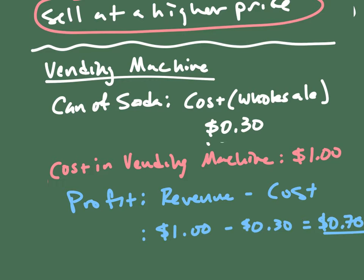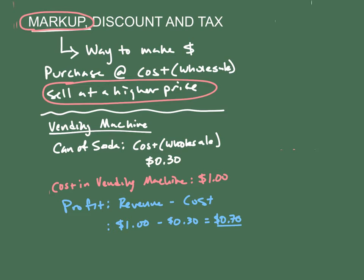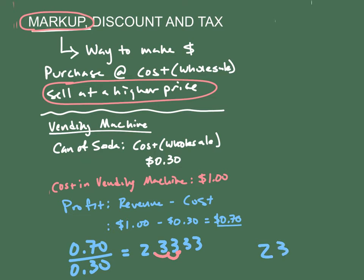Now the question is: what is the markup? You calculate markup by taking your profit and dividing it by your cost. So 0.70 divided by 0.30 gives you 2.3333. Turning this into a percentage, you get a 233% markup. This is huge! People that own vending machines make a lot of money. For every can of soda they sell, they're making 70 cents.